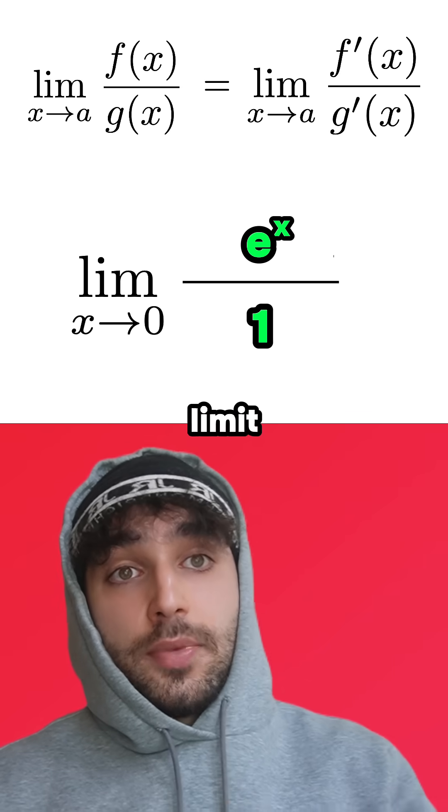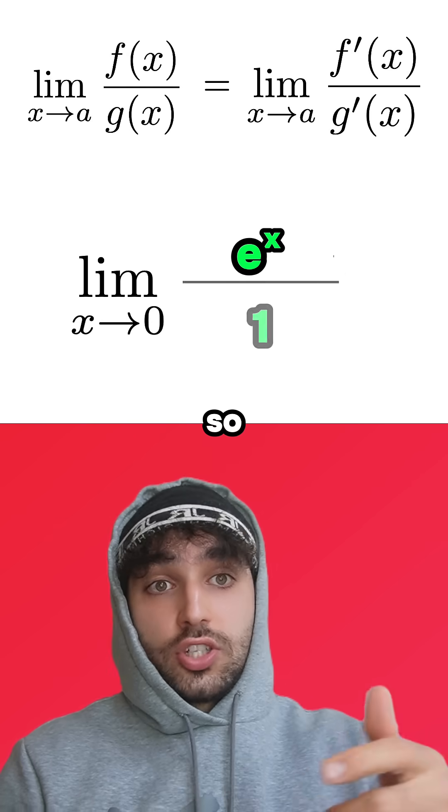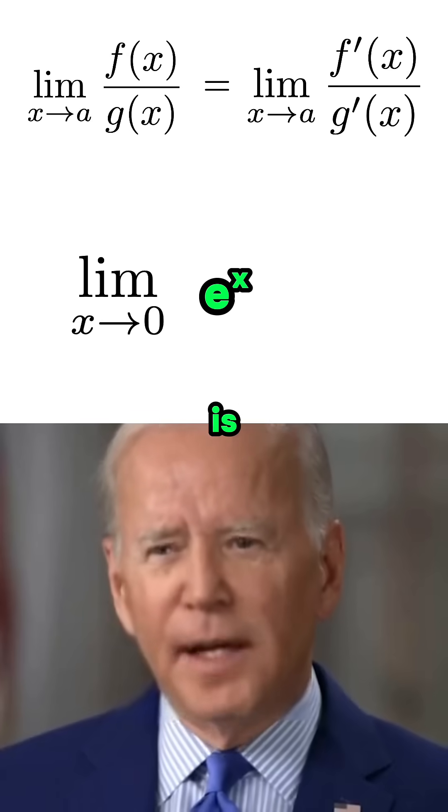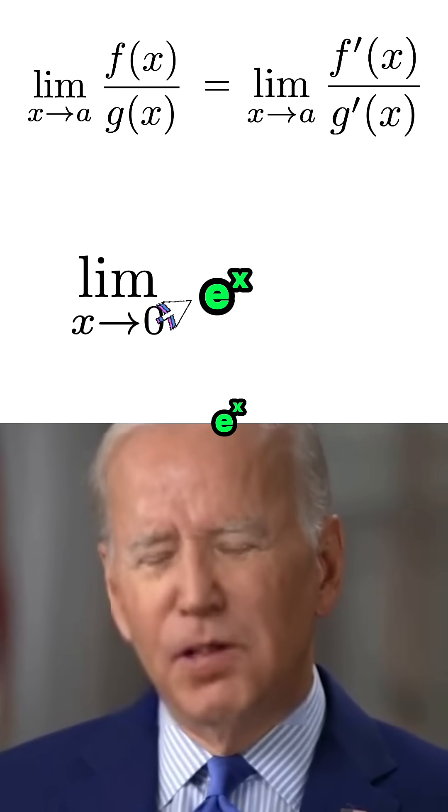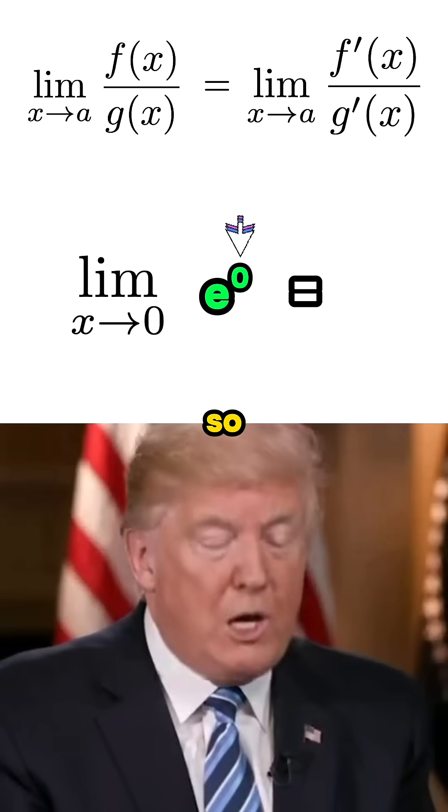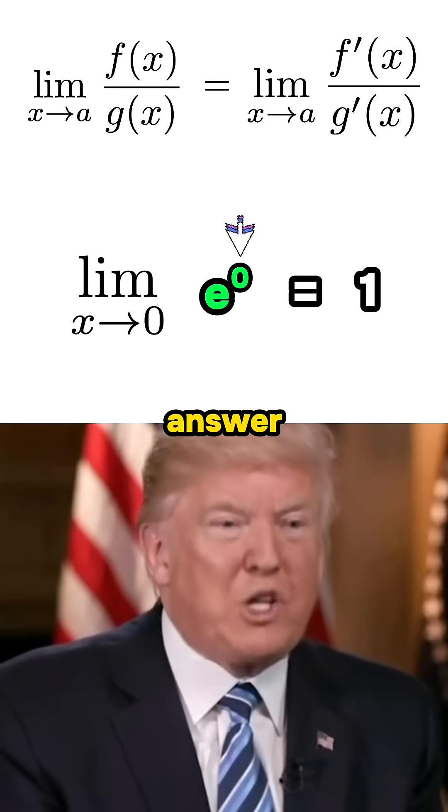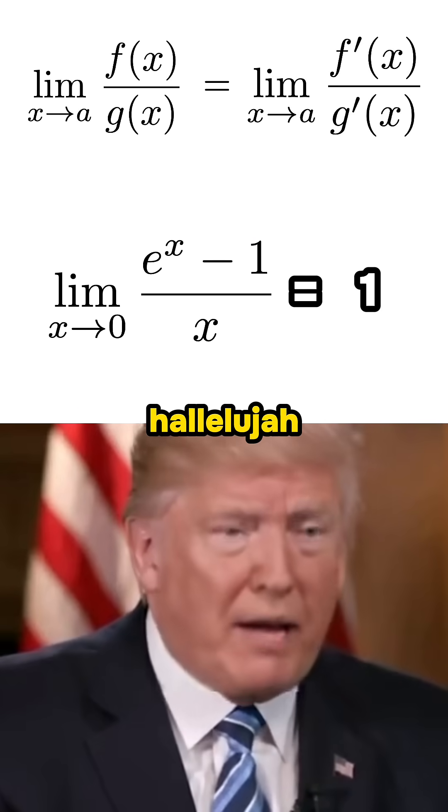Oh, so now we've got the limit of e to the x over 1, so just e to the x. Exactly, and this is actually doable now. As x approaches 0, e to the x will approach e to the 0. So the answer to this is 1, and that's the answer to our original question, hallelujah.